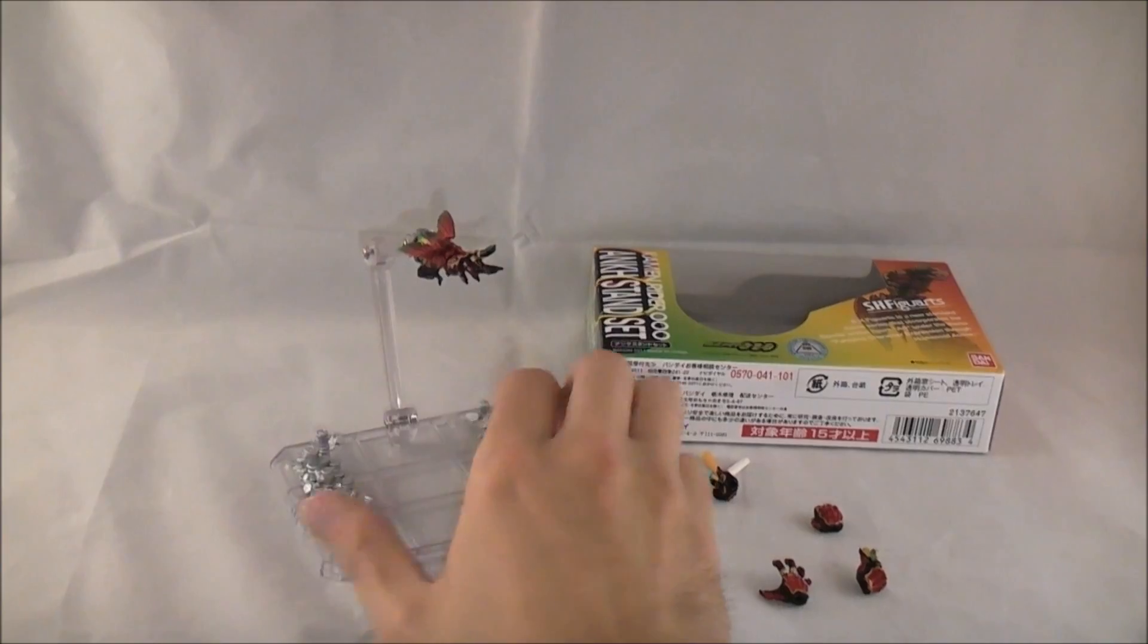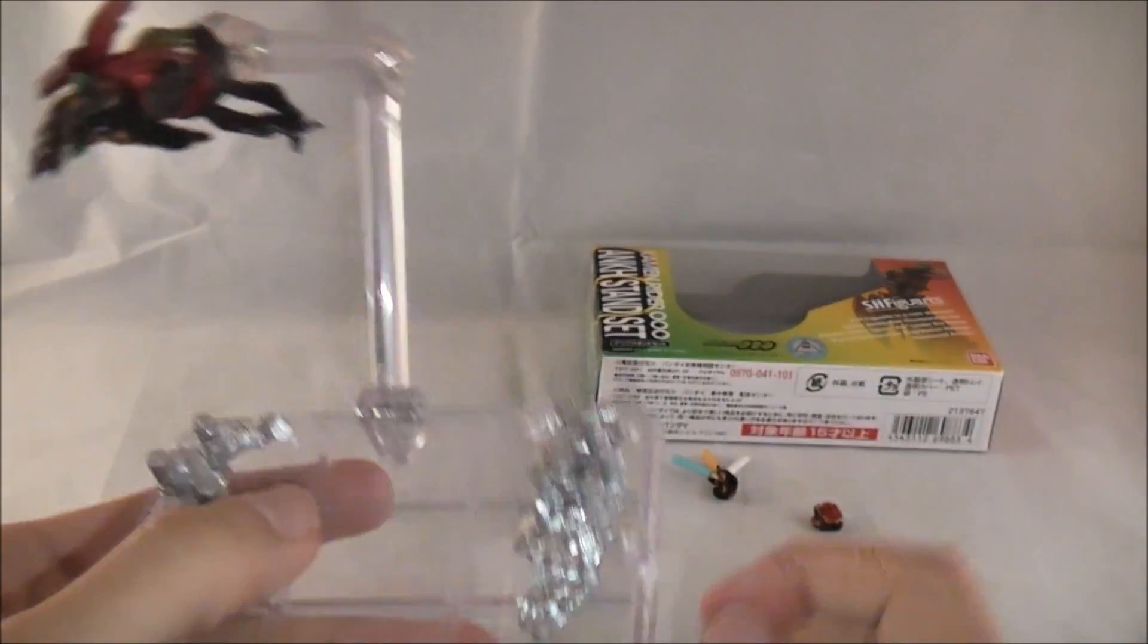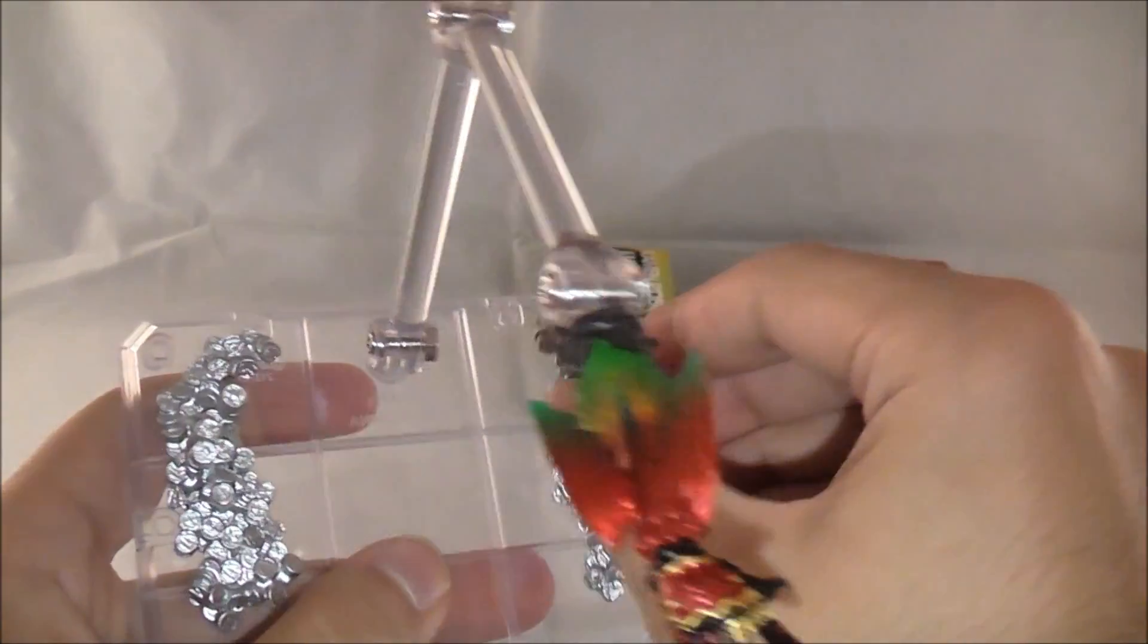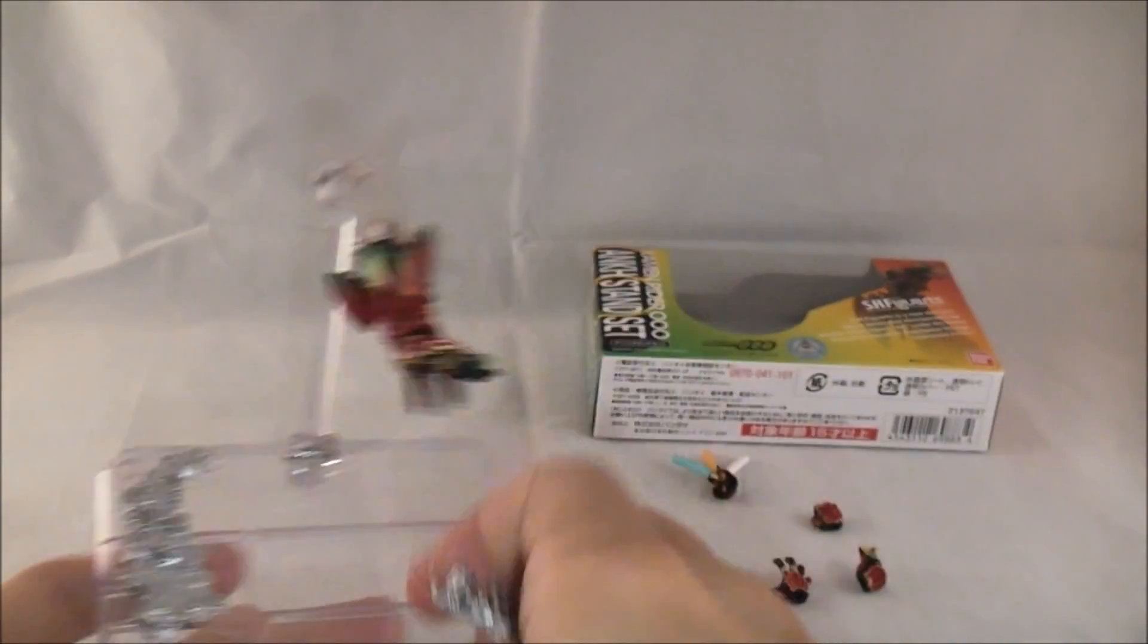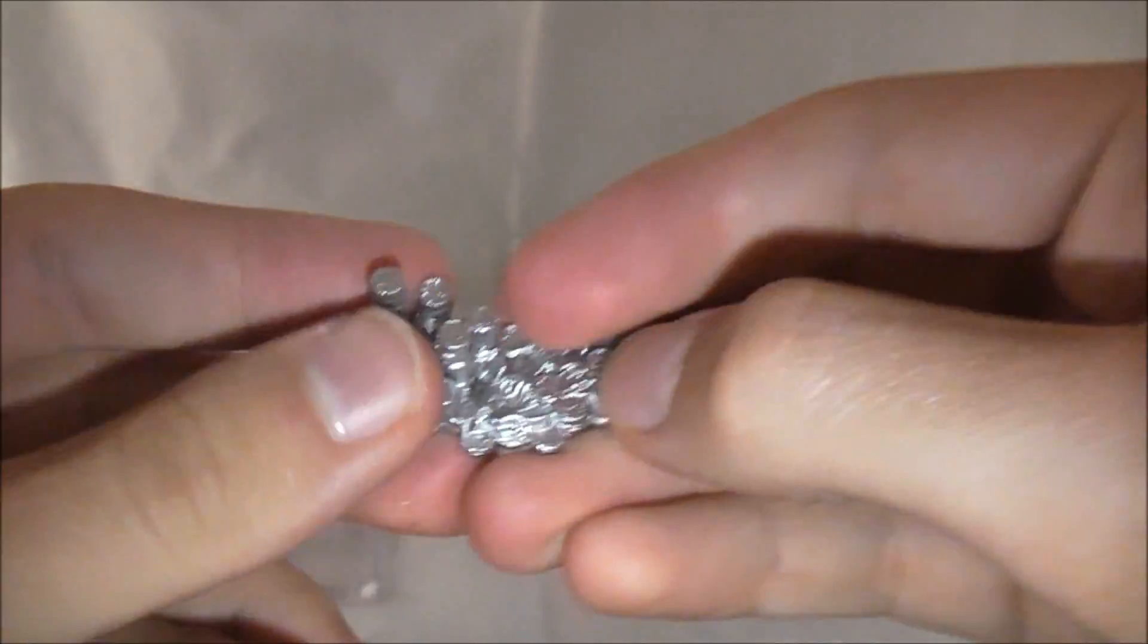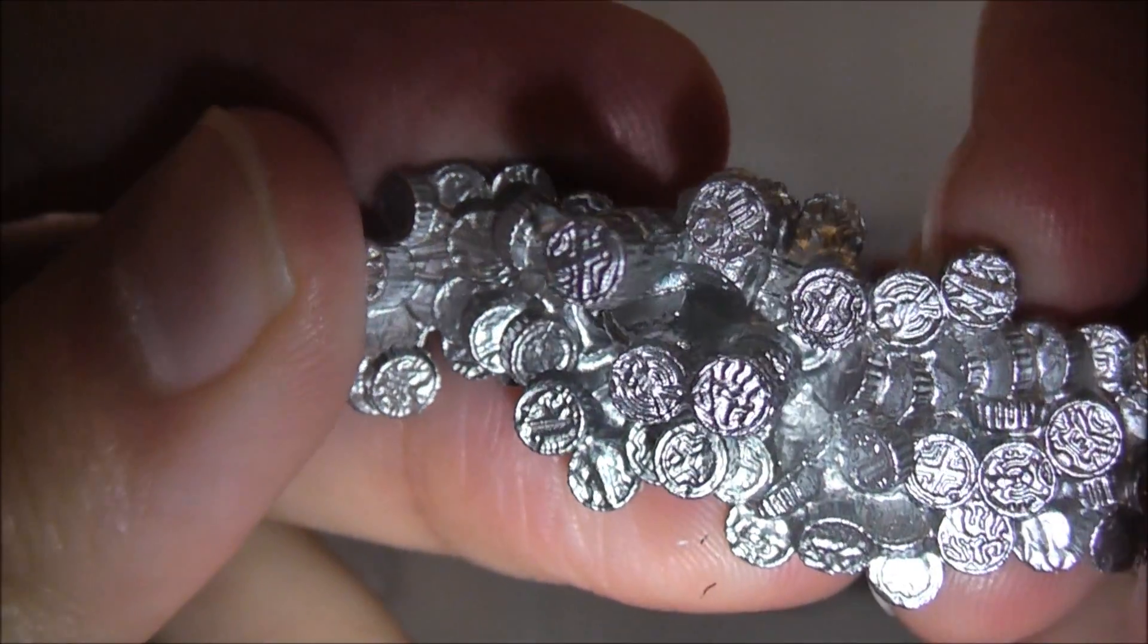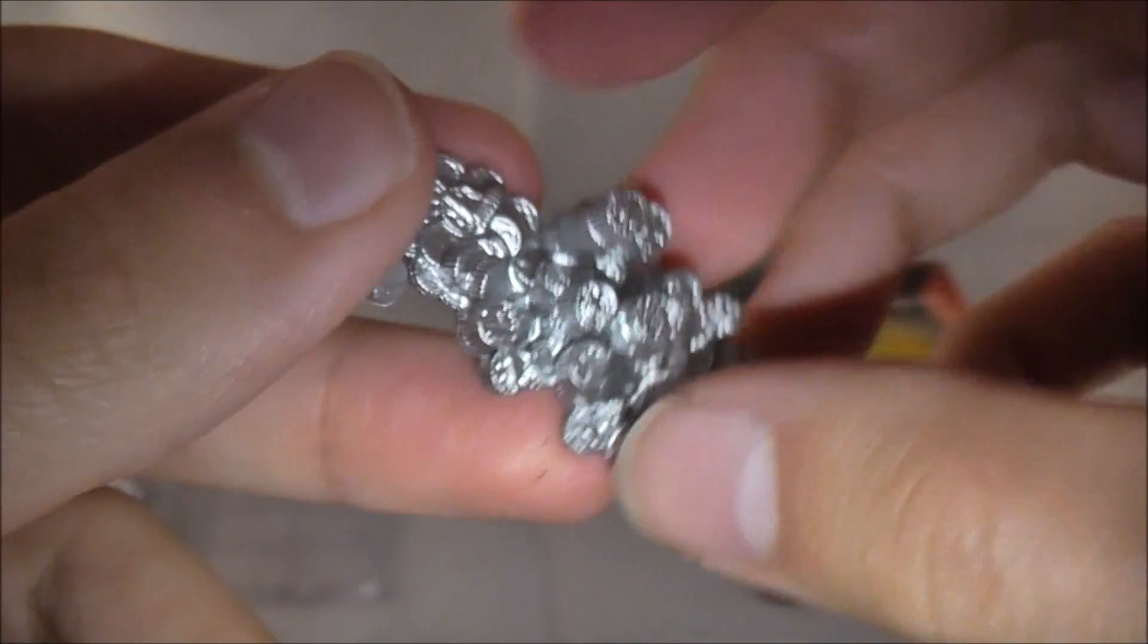And then he comes with this stand, which is all clear. And there's nothing to it, like no Ankh writing on it or anything. And then he comes with these two sections here, which actually come off. I'll show you one, because they're the same thing. A bunch of stacked cell medals. And if you can see, they actually have individual animal designs on them, which is really cool, actually.